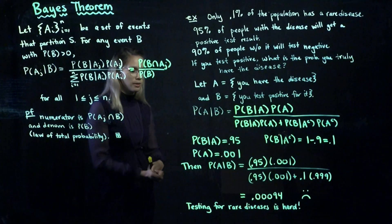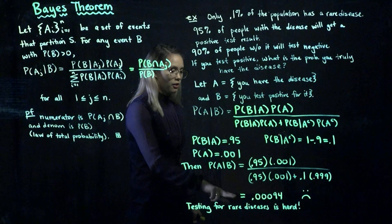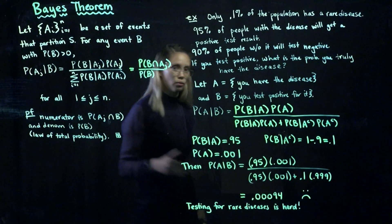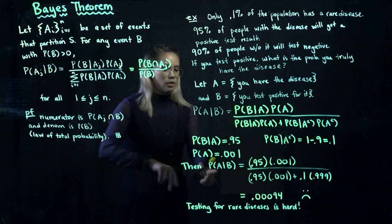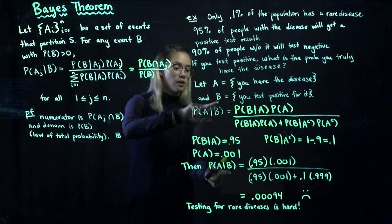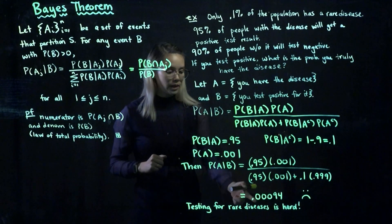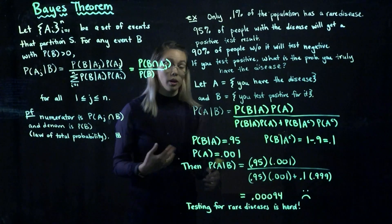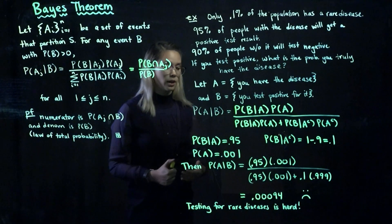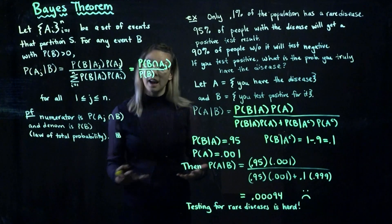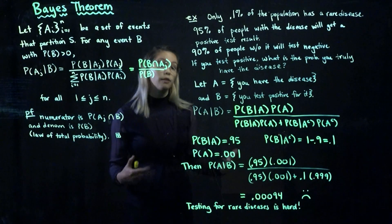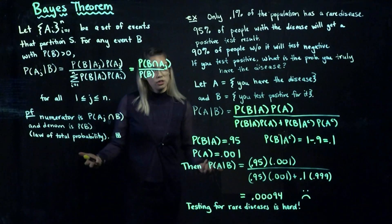Now we plug those numbers in and calculate: the result is approximately 0.00094. So the probability that you actually have the disease given that you tested positive is only about 0.00094. This highlights the difficulty of testing for rare diseases — even with a fairly accurate test, you get a large number of false positives. Testing for rare diseases is just hard.